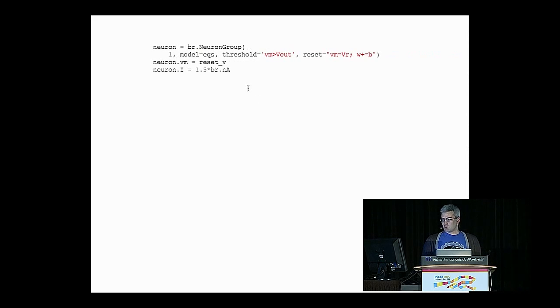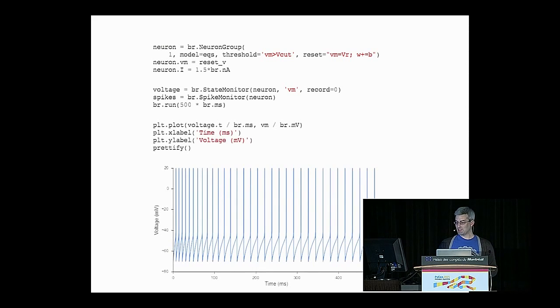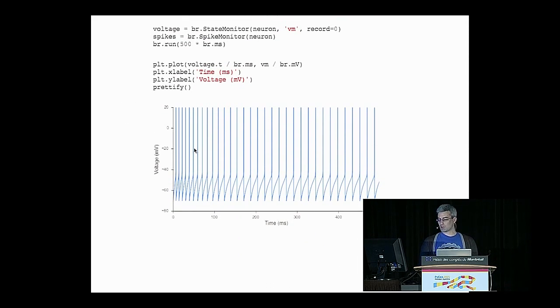So we can create what Brian calls a neuron group with those equations. We're just going to make one neuron in this case. We set its membrane voltage to that reset voltage, inject one and a half nanoamps of current, and then we monitor the voltage from that cell and the spikes coming out of it, run it for 500 milliseconds. And we get something that looks very similar to what we had in neuron.